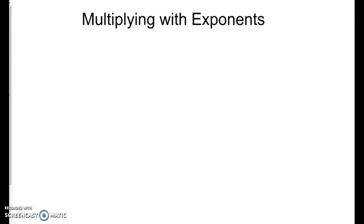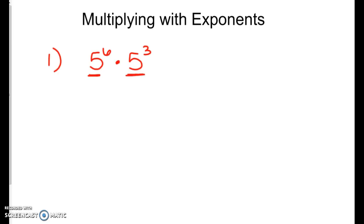I'm going to show you a few more examples with multiplying exponents — we'll start with a nice easy one. We'll start with five to the sixth power times five to the third power. When we have the same base, we can use our multiplying with exponents property, which says that when we have the same base and we're multiplying, we can add our exponents.